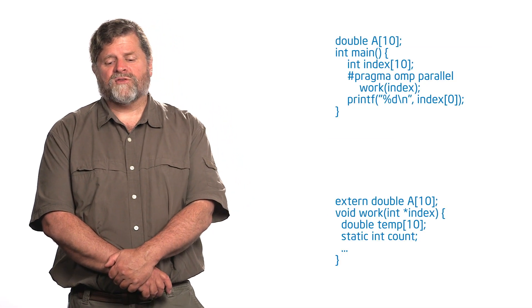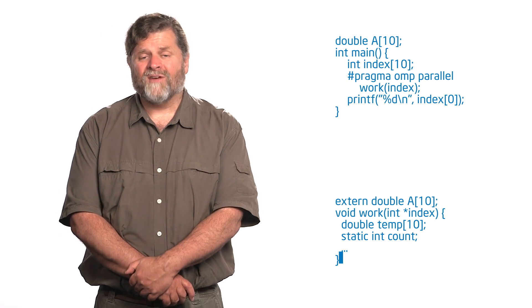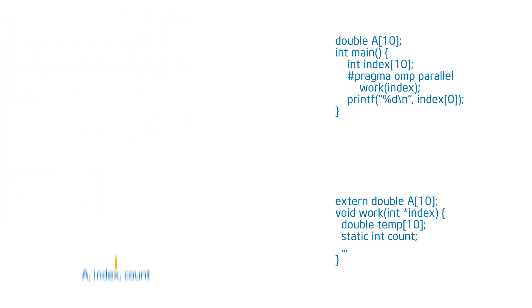Now let's imagine I have three threads and walk through the data environment as seen by each of those threads. As I come into the parallel region, before the parallel region, I've got 'a', 'index', and 'count' sitting on the heap. 'count' is sitting on the heap because it was declared static inside the function. 'index' is sitting on the heap because I declared it prior to the parallel region. 'a' is sitting on the heap because it was a file scope variable declared prior to main and declared in the function as an extern.